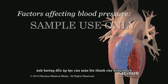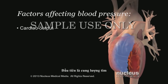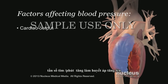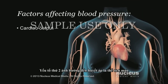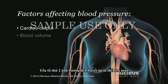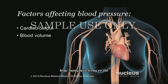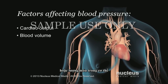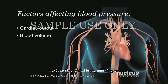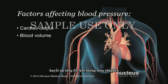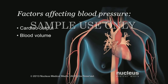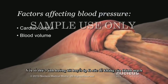As blood flows through your arteries, three main factors affect the pressure on your artery walls. The first is cardiac output, or the amount of blood your ventricles push out of your heart each minute. Your blood pressure goes up as cardiac output increases. The second factor is blood volume, or the total amount of blood in your body — blood pressure also goes up as blood volume increases.